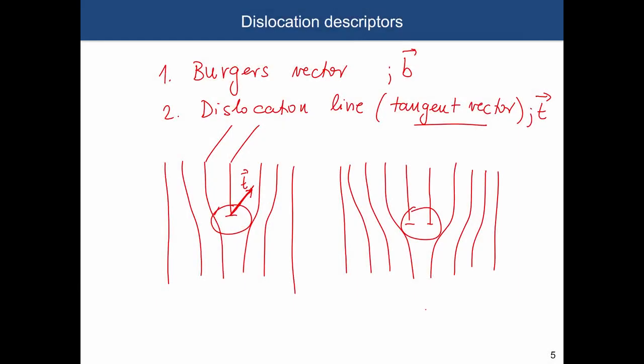Last time we already defined the dislocation line, the tangent vector t, and the so-called Burgers vector b. Today we will talk specifically about how we define this vector.